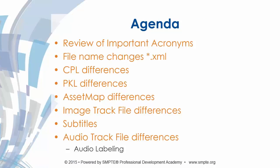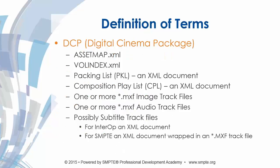I always start off these presentations by reviewing some of the important acronyms. DCI, or Digital Cinema, has its share of acronyms. I'll talk about some of the file name changes, some of the simple ways to detect whether you have a SMPTE DCP or an Interop DCP. We'll talk about differences in the CPL file, the packing list, the asset, the image track file, the subtitles — there's quite a bit of changes there — and then the audio track files, which have additional capabilities in SMPTE packages, namely audio labeling.